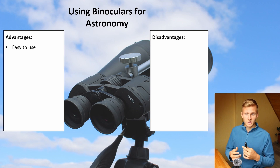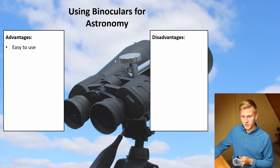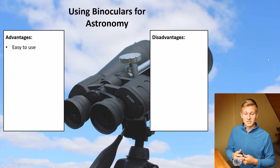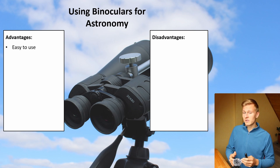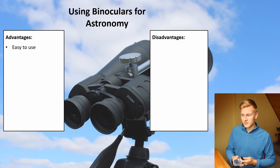You just attach them to a tripod. As you can see in the background, I've attached my binoculars — these 20x80 binoculars — to a tripod, and then you can directly start observing the night sky. So it's very easy to use them, and that's definitely a big advantage of starting with binoculars into astronomy.